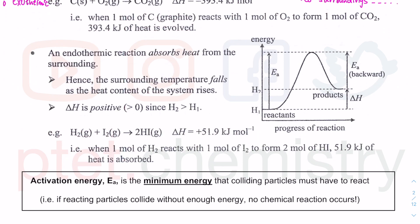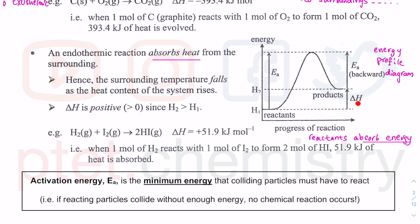For endothermic reactions, the system absorbs heat from the surrounding. On the energy profile diagram — which profiles the reactants, not the surrounding — the reactants absorb energy, so the products have a higher energy than the reactants. As the reactants form the products, they absorb energy. The delta H arrow goes from the reactant level to the product level — one direction, upward. Going upward is positive.